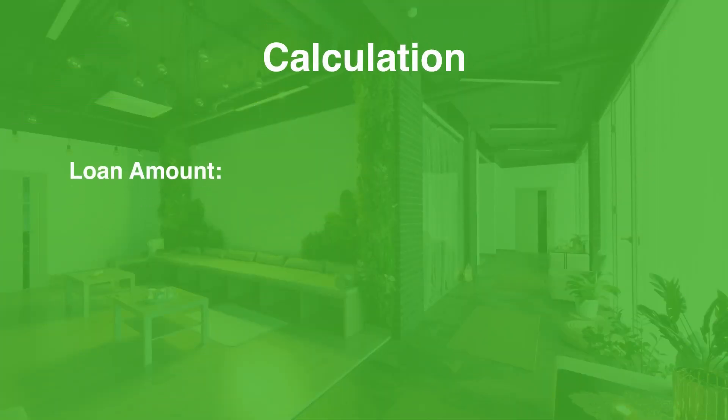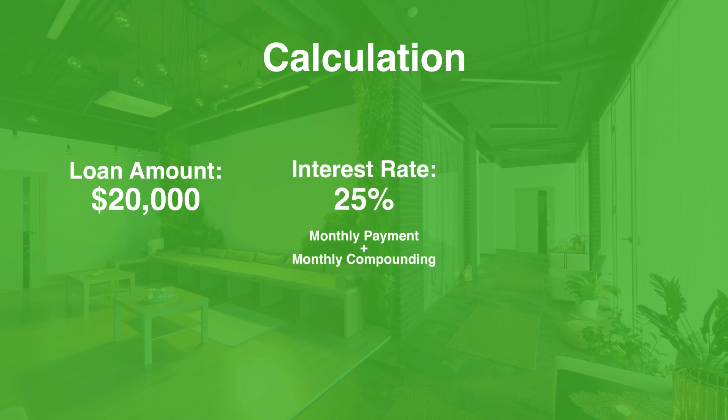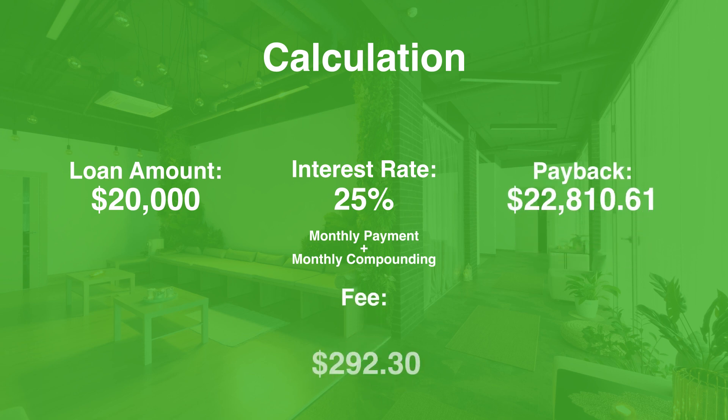On the other hand, typical business loans are based on interest over time, so the sooner you pay off a loan, the less you will pay. For example, if you compare it to an APR loan — if you get a one-year loan with a $20,000 principal and a 25% interest rate with monthly payments and monthly compounding — you will pay back $22,810, so the fee for borrowing the money is $2,810. This compared to $5,000 you would pay if you borrowed with a factor rate of 1.25 times.